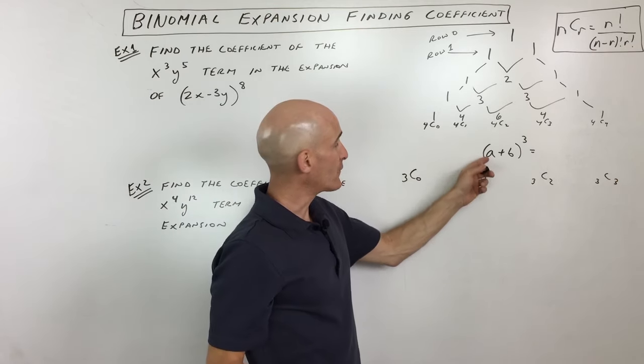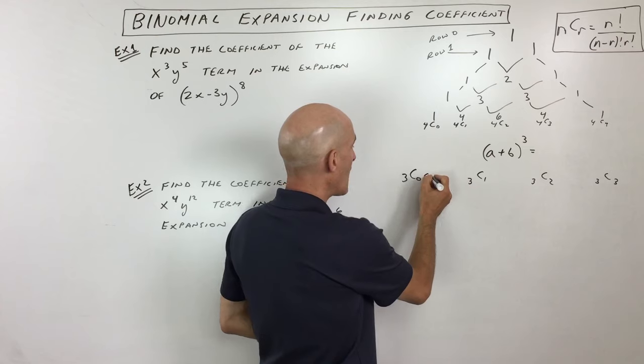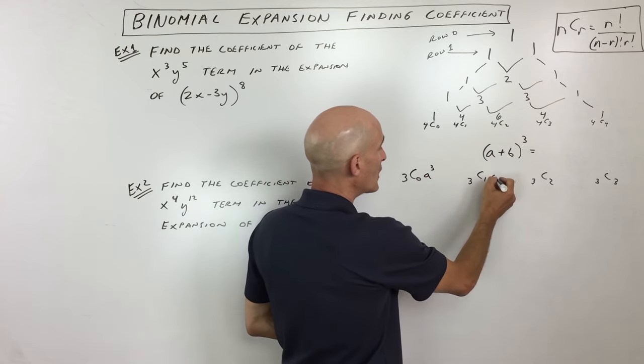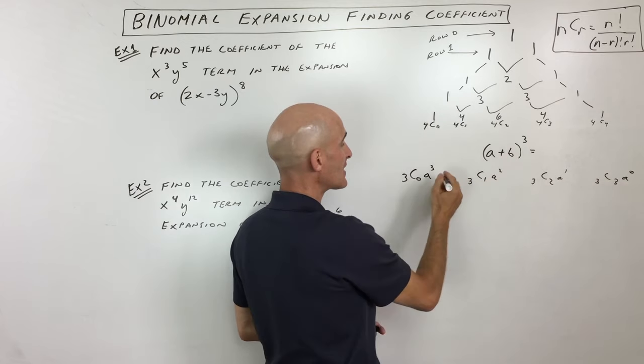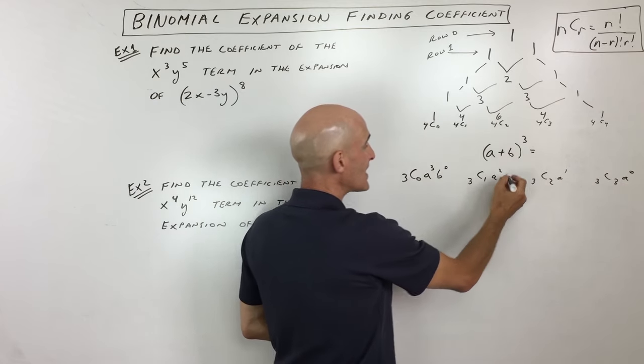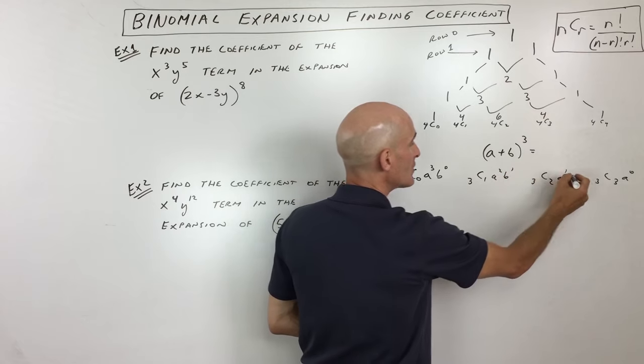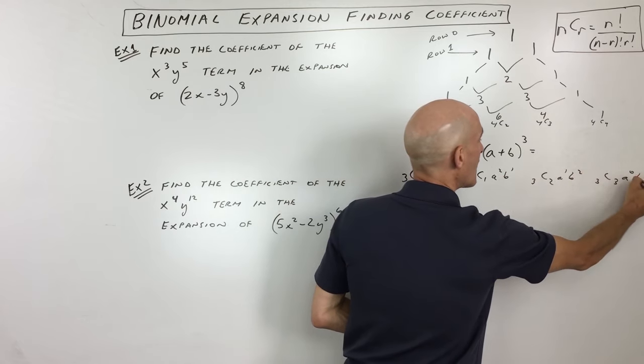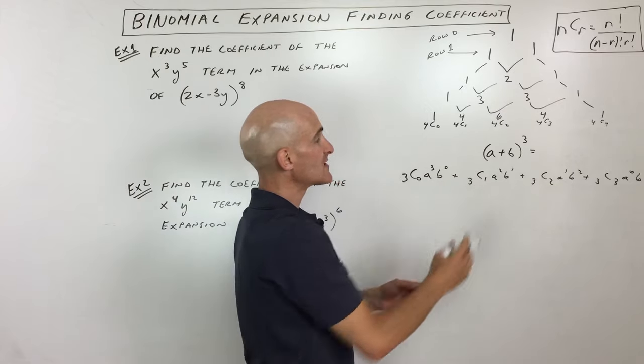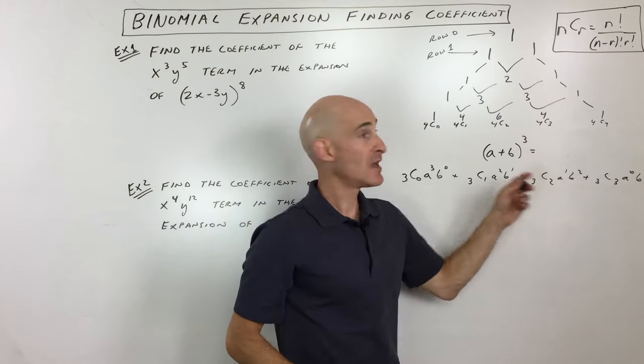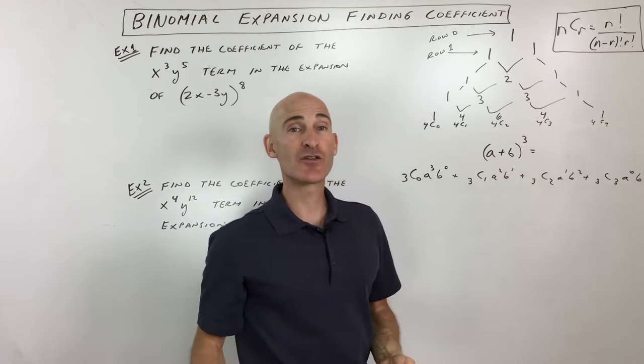Then what you do is you take the first term, a, and you go to the third power, and you go in descending order: a squared, a to the first, a to the zero. Then you take the second term, b, and you go in ascending order. So b to the zero, b to the first, b to the second, and b to the third. And then these terms are all added together, and you can go ahead and simplify, and those are going to be the terms in the expansion of (a plus b) to the third power.